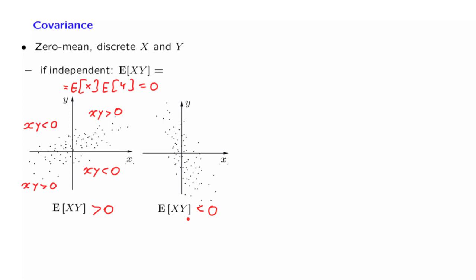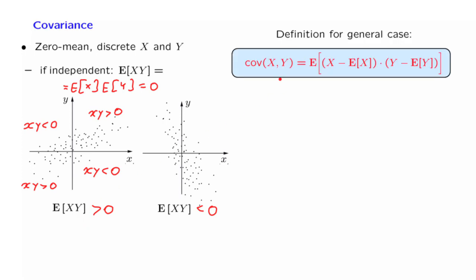Let us now generalize. The random variables do not have to be discrete. This quantity is well defined for any kind of random variables. And if we have non-zero means, the covariance is defined by this expression. What we have here is that we look at the deviation of x from its mean value and the deviation of y from its mean value, and we are asking whether these two deviations tend to have the same sign or not — whether they move in the same direction or not. If the covariance is positive, it tells us that whenever x is above its mean, then typically the deviation of y from its mean will also tend to be positive. To summarize, the covariance in general tells us whether two random variables tend to move together — both being high or both being low — in some average or typical sense.